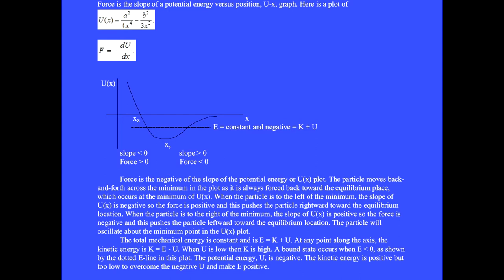When the particle is to the left of the minimum, the slope of U(x) is negative so the force is positive and this pushes the particle rightward toward the equilibrium location.